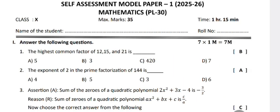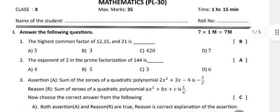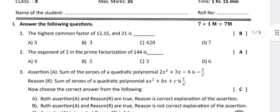Hello, welcome to my YouTube channel. Today on 11th August 2025, the self-assessment model paper 1 for the year 2025-26, subject Mathematics, Class 10th is completed. The question paper was given for 35 marks and the time allotted was 1 hour 15 minutes. The first question given was: the highest common factor of 12, 15, and 21 is...